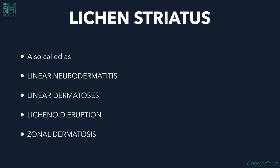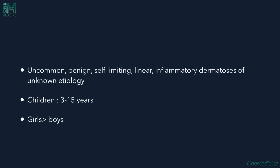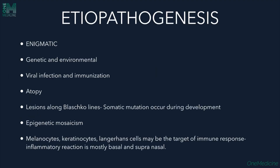Lichen striatus is also called linear neurodermatitis, linear dermatosis, lichenoid eruption, and zonal dermatosis — named linear because the lesions appear in a linear fashion. It is an uncommon, benign, self-limiting, linear inflammatory dermatosis of unknown etiology. Most commonly children aged 3 to 15 years are affected; girls are more commonly affected. Etiopathogenesis is enigmatic — genetic and environmental factors, viral infection, and immunization can cause it. Atopy (A2P) is an important association; children with frequent upper respiratory tract infections and a family history of asthma are often affected.